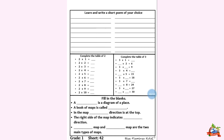In the map, which direction is at the top? North. In the map, north direction is at the top. N-O-R-T-H, north. The right side of the map indicates which direction? It shows the east direction. E-A-S-T, east direction. Political map and physical map are the two main types of maps.